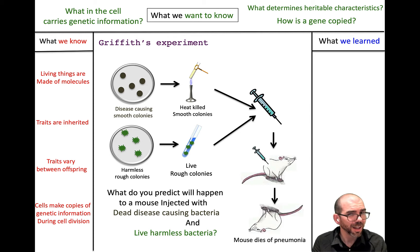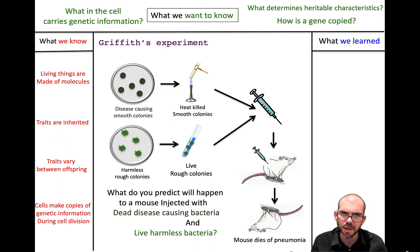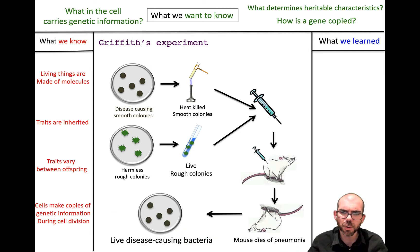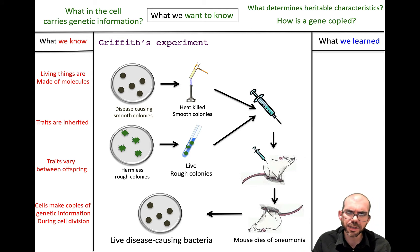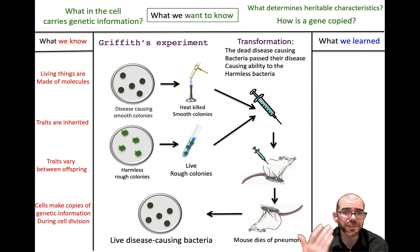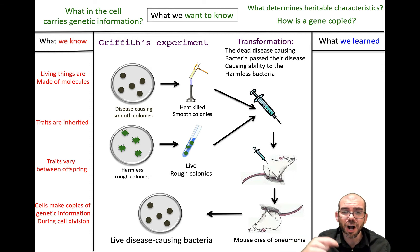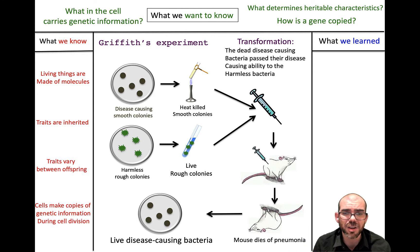The mouse died — which was bizarre, because the disease-causing smooth colonies were heat-killed and the harmless ones were alive but harmless. Griffith cut open his mouse and found something even stranger: the disease-causing colonies that had been killed somehow appeared to be back, and the harmless ones had disappeared. Griffith proposed the idea of transformation — that the dead disease-causing smooth colonies passed their ability to cause disease to the harmless bacteria through some kind of molecule.